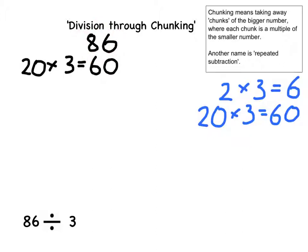I can now subtract this chunk from 86 to find another number to chunk from. So I'm going to use a ruler to separate my working out for the subtraction from my answer, and then solve the subtraction. 86 subtract 60 gives me an answer of 26.